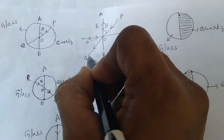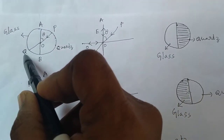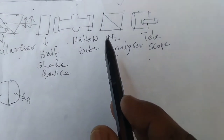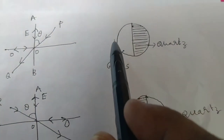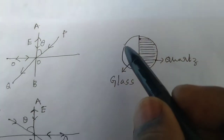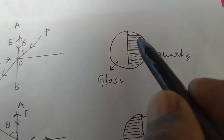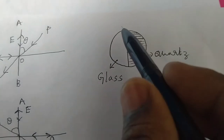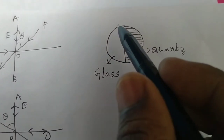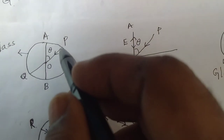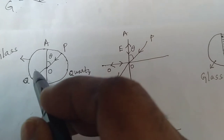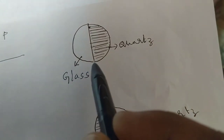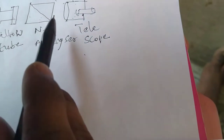The combined light moves in the OQ direction, which is parallel to the principal section of the analyzer. When you observe through the telescope, the glass part appears bright and the quartz part appears dark. In this condition, the light is equally distributed — that is why the glass part is bright. The light enters from the quartz plate to the glass plate and is equally distributed, making the glass part bright and the quartz part dark. This is the image seen through the telescope.